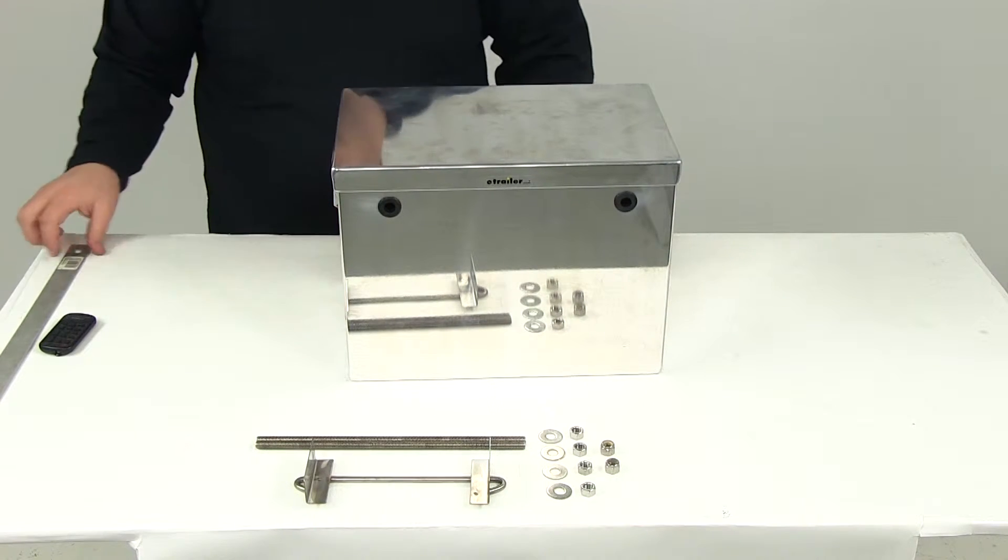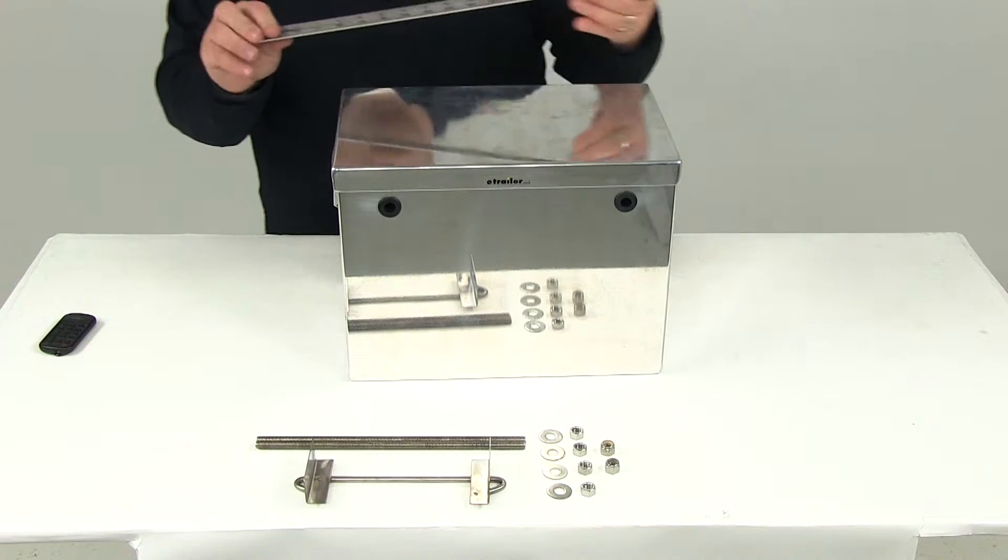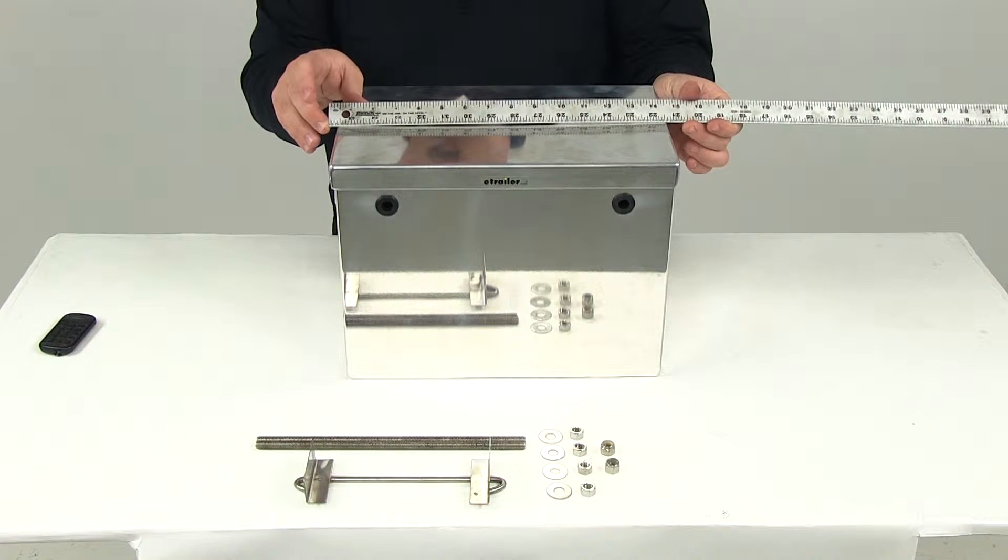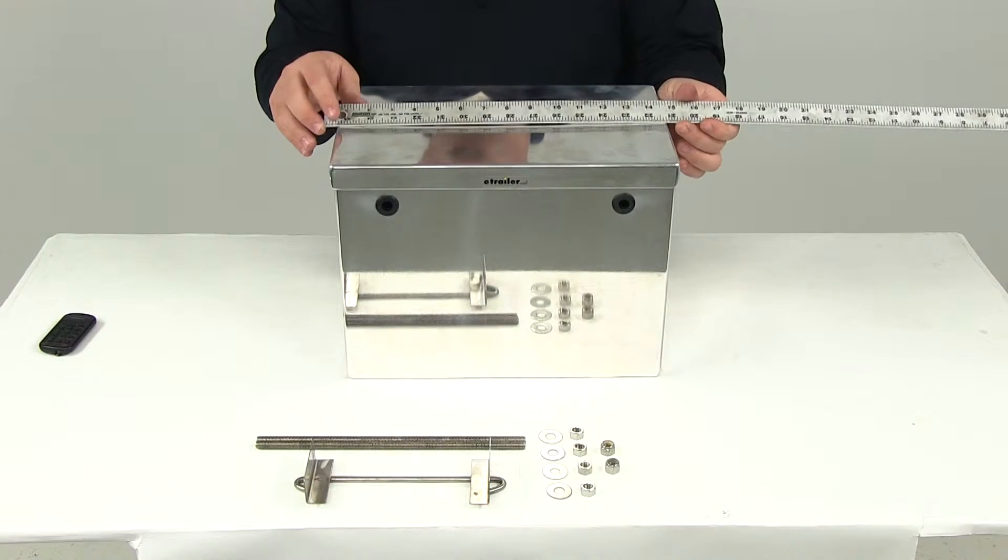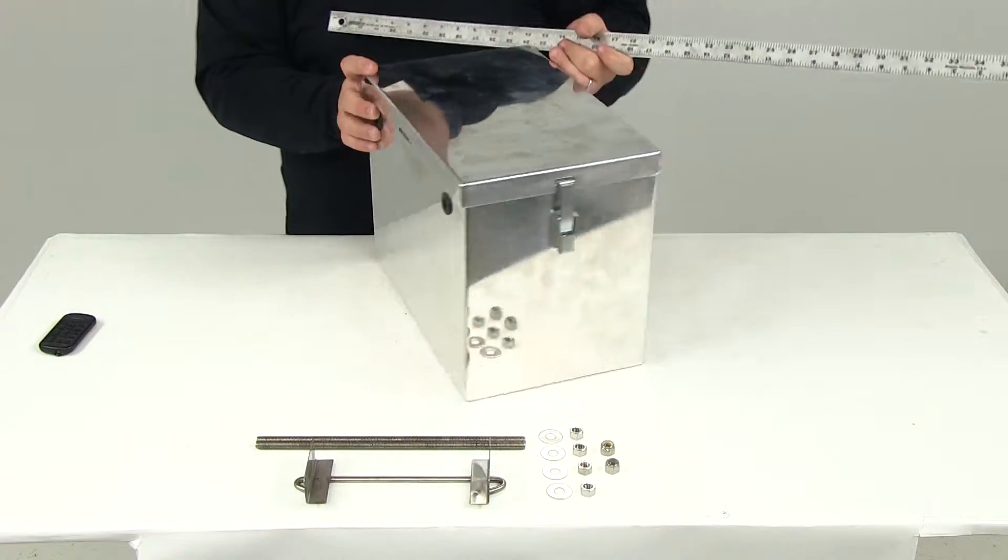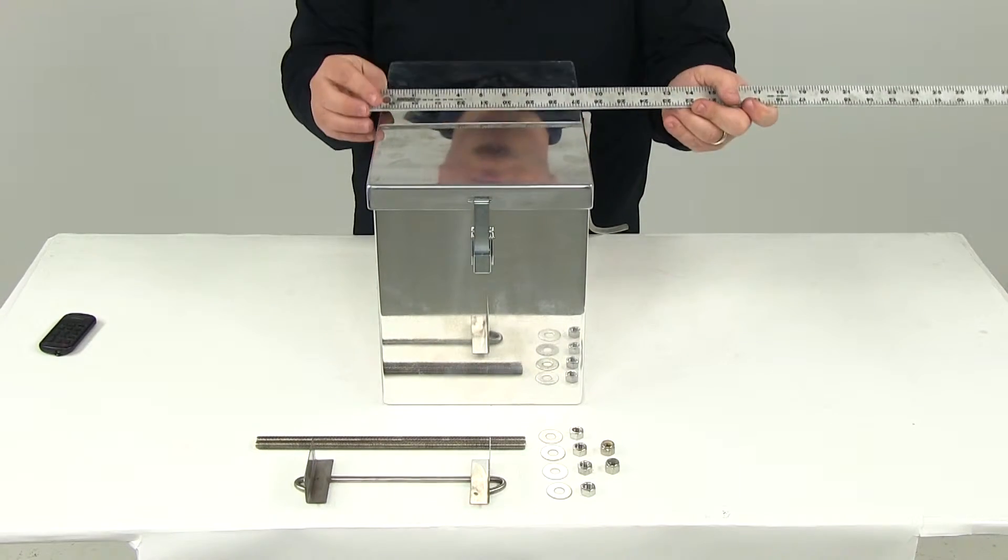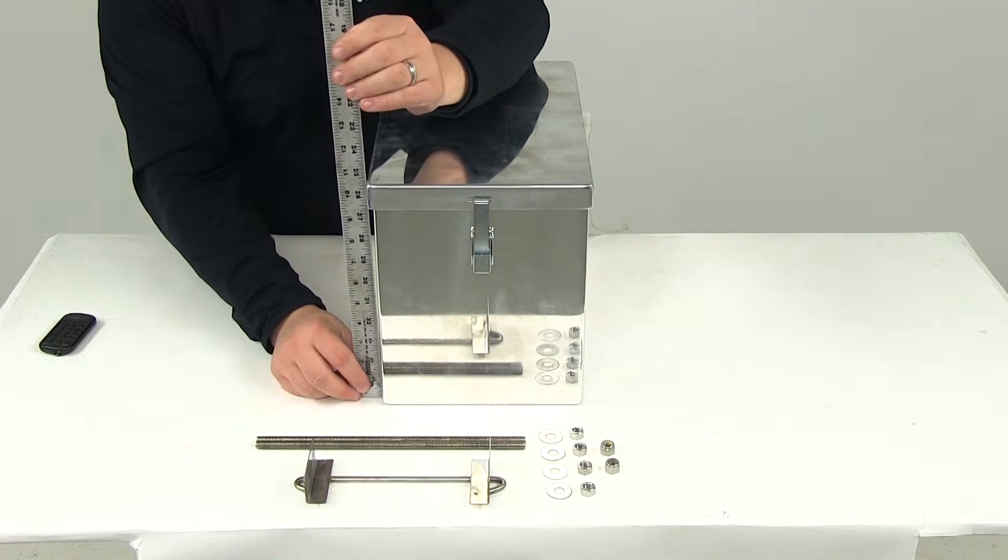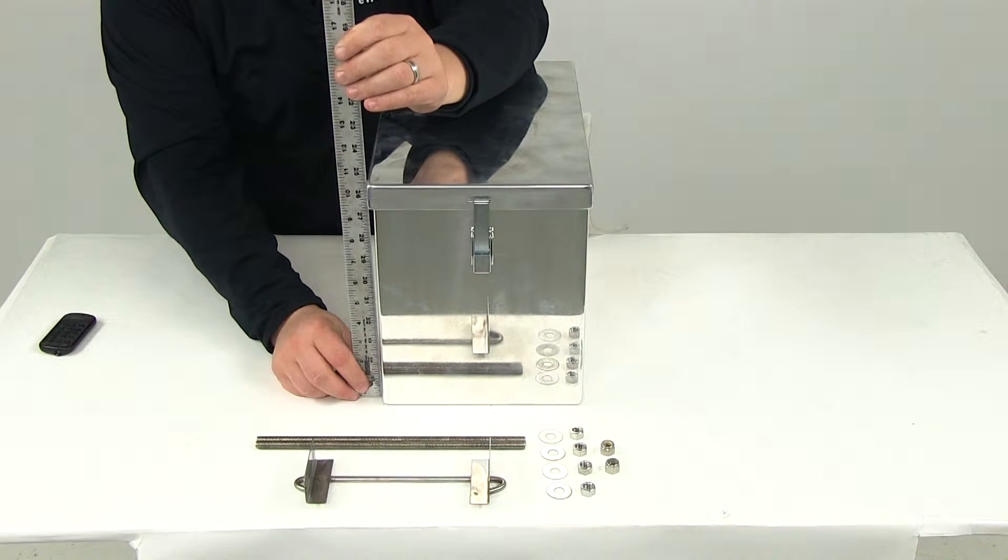Now to go over the overall dimensions, outside to outside, measuring the edge right here including the latches, it's going to give us a measurement of about 15 and a quarter of an inch. If we measure the width outside to outside edge, that's going to give us a measurement of about 9 inches. And then the overall height is going to measure about 10 and 5 eighths of an inch.